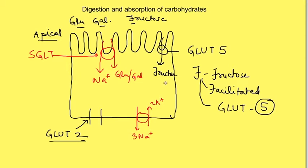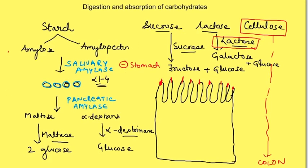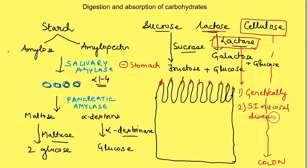After understanding the mechanism of digestion and absorption of carbohydrates, we should know the common clinical disorders. The only common clinical condition is deficiency of the enzyme lactase. Since lactase is required for breakdown of lactose, this deficiency leads to undigested lactose in the lumen of the intestine. Lactase deficiency can occur either genetically, with decreased lactase enzyme in adults, or secondary to small intestinal mucosal disease, since any disease affecting the mucosa will reduce lactase enzyme.